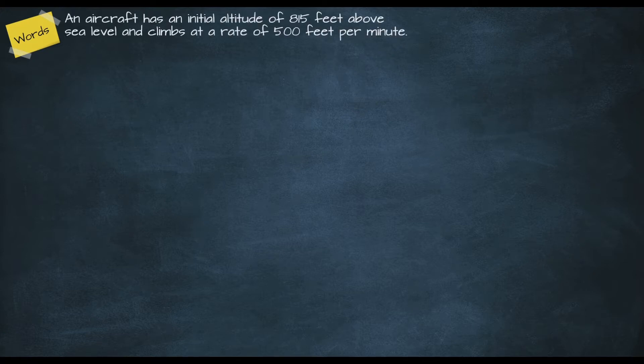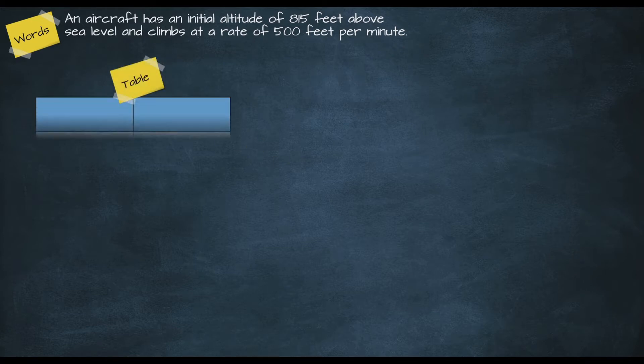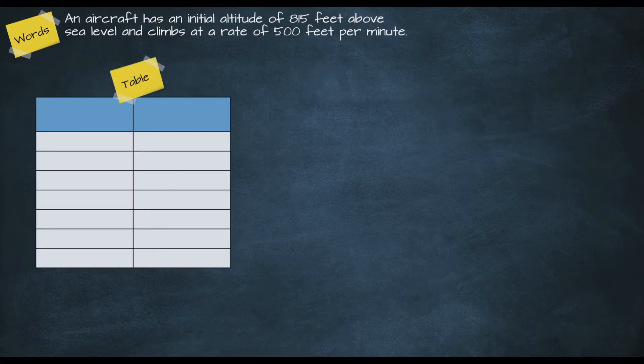One of the easiest ways to describe our relationship is to use a word description. We know that the starting altitude was 815 feet and the rate of climb was 500 feet per minute, so we could simply say: an aircraft has an initial altitude of 815 feet above sea level and climbs at a rate of 500 feet per minute.